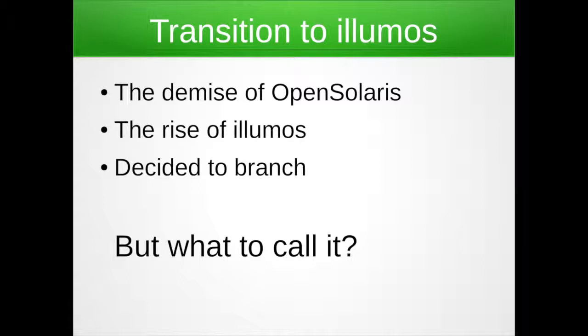There was OpenSolaris, then that came to a screeching halt as an open project. The OpenSolaris or Solaris core code was still open, and that transitioned to the Illumos project. There were various other distributions out there — OpenIndiana from around here, for instance — continuing the OpenSolaris legacy.